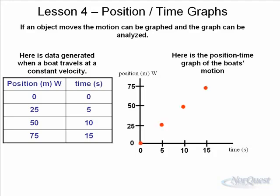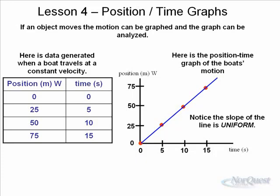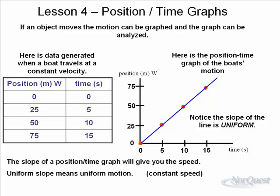We can see that after five seconds, 25 meters; 10 seconds, 50, and so on. When we connect all those dots using a straight line, we notice that the slope of the line is uniform. A uniform slope gives us uniform velocity. Remember y = mx + b — in this case, m is a constant. The slope of the position time graph gives you the speed, and uniform slope means uniform velocity.